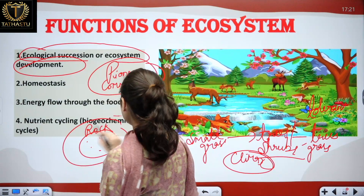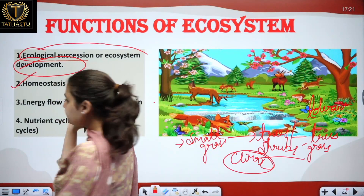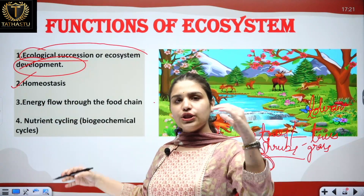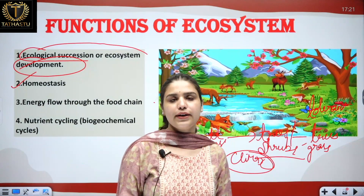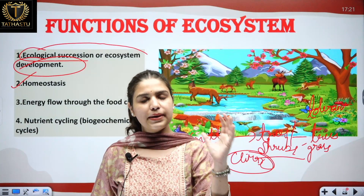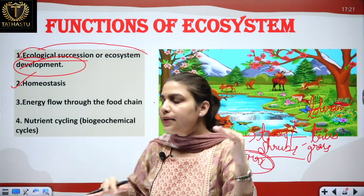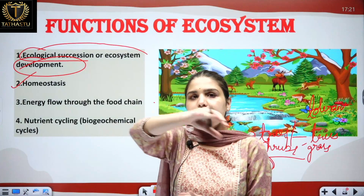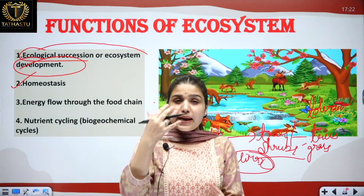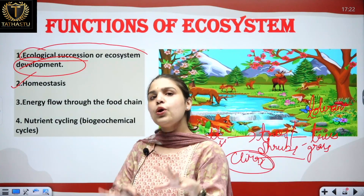Now the second function of ecosystem is homeostasis. Homeostasis is the ability to maintain internal temperature irrespective of changes taking place in external factors. For example, if there are certain external changes, our brain sends signals to our body to maintain that temperature. So homeostasis is the ability to stabilize internal conditions regardless of external environmental changes.